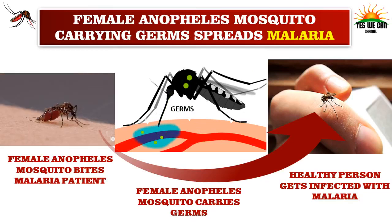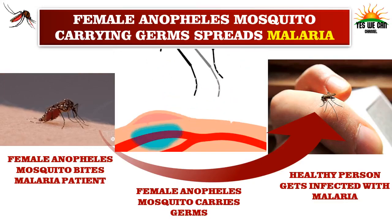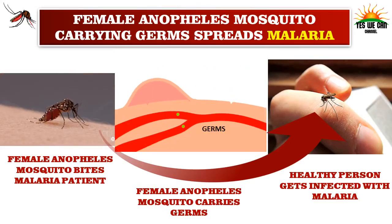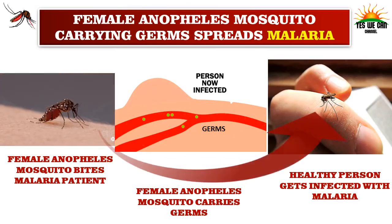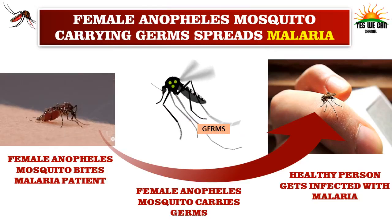When a female Anopheles mosquito bites a malaria patient, it takes blood with germs of malaria and becomes infected. When this infected female Anopheles mosquito bites a healthy person, the germs are injected and released into the blood of the healthy person, and the healthy person gets malaria.